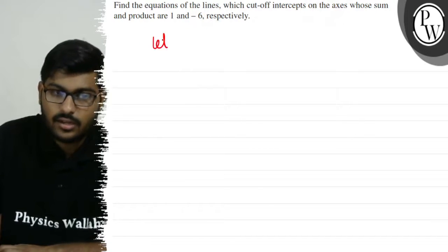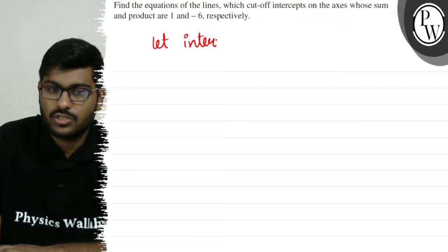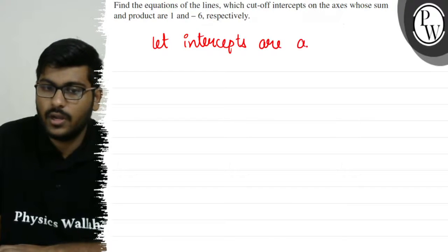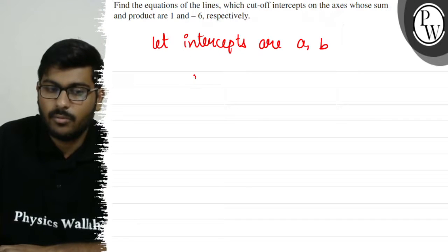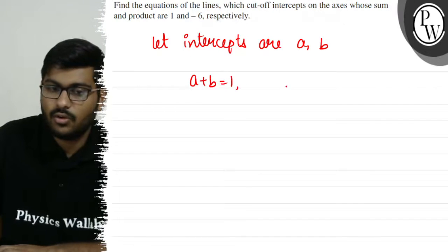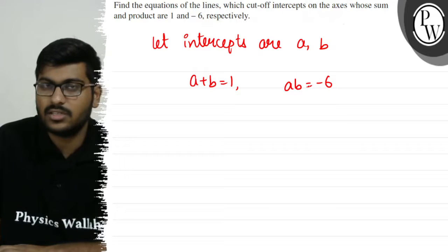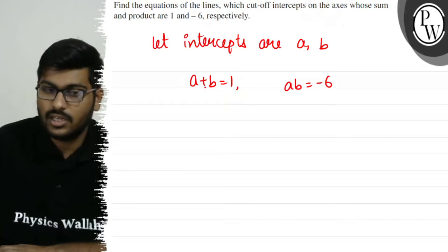So let the intercepts be a and b. Now we know that the sum of intercepts is 1 and the product of intercepts is minus 6.